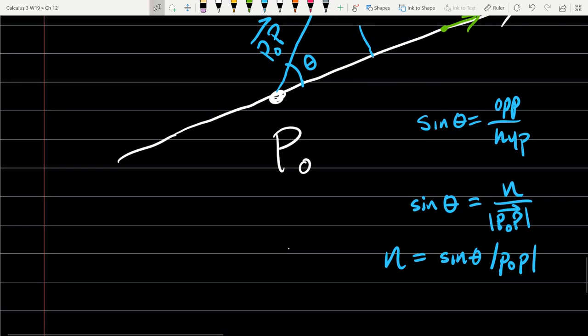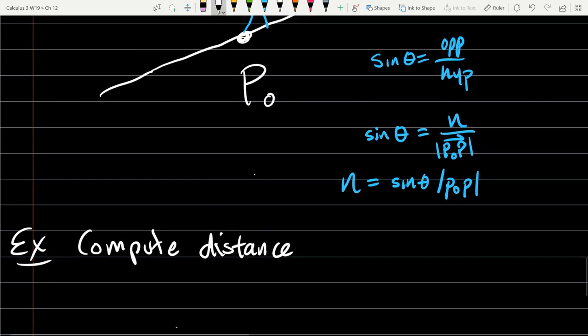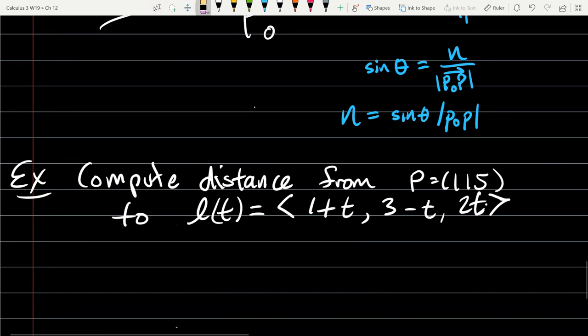Let's go ahead and compute the example here. We'll go distance from P=(1,1,5) to the line L(T) equals, I'm going to write it in parametric form: (1+T, 3-T, 2T).